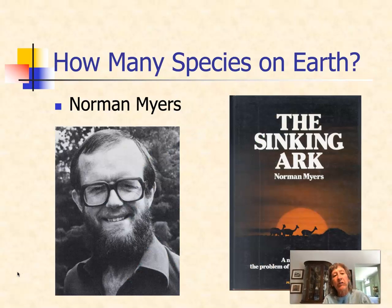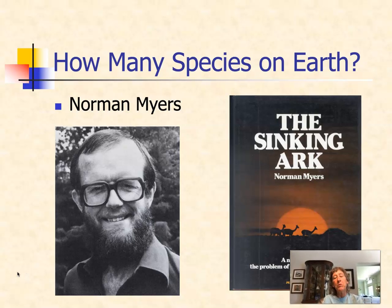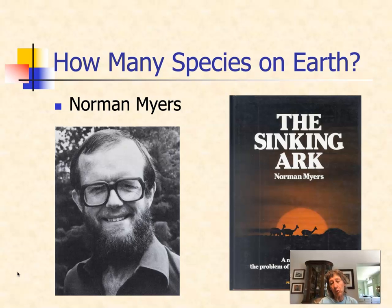We don't even know how many species are on the planet. In the 1980s, a man named Norman Myers, who was studying tropical rainforests, raised an alarm call about extinction in a book called The Sinking Ark. In that book, he estimated there were 10 million species on the planet. When he came up with that number, he was kind of laughed out of the biological community — people didn't believe there could be that many species — but he was one of the first people to really look at biodiversity in tropical rainforests.